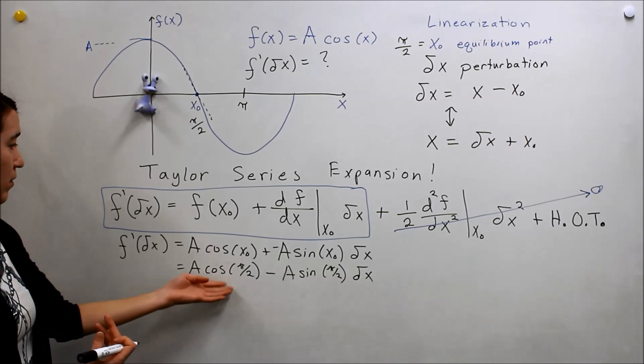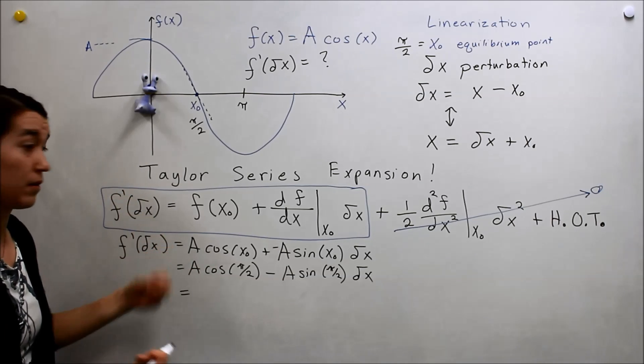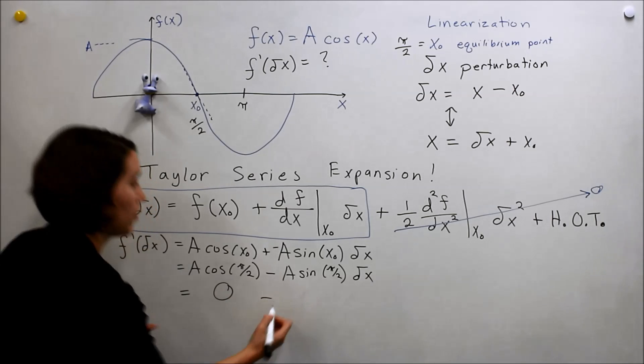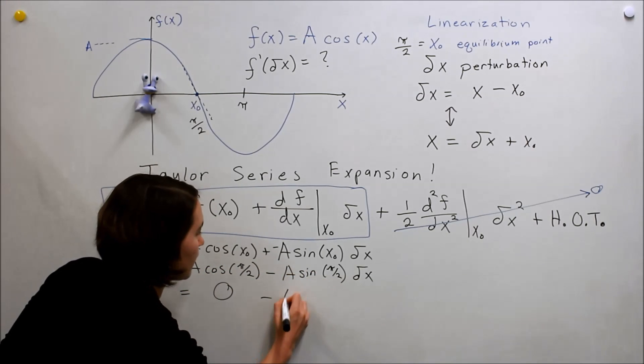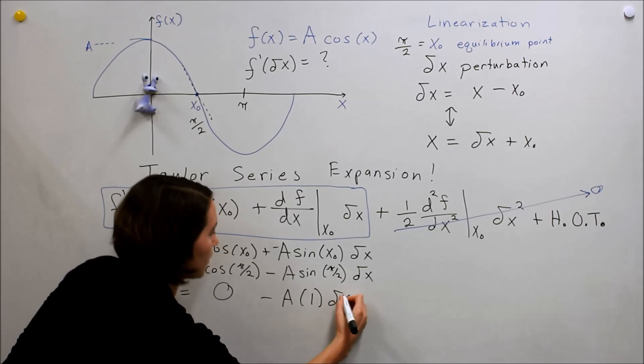Now we can evaluate these. We know the cosine of π over 2 is 0. And then we know that the sine of π over 2 is 1. So it's negative A minus 1 δx.